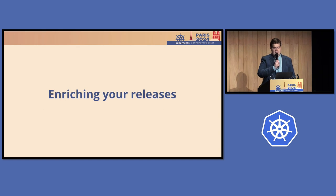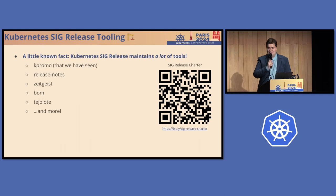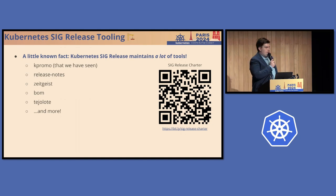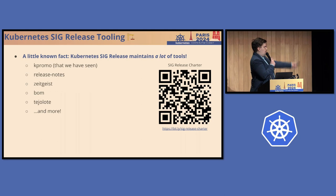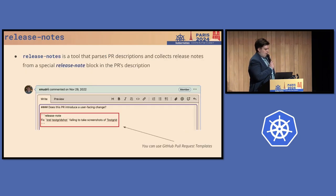Now we're at the part about enriching your releases. Maybe a little-known fact — or maybe very well-known — Kubernetes SIG Release maintains a lot of tools. I'd like to highlight some of them: K-Promo, which we've already seen; the release notes tool; Zeitgeist; BOM; Telehote; and more. I'm pointing to the SIG Release charter because it lists all the subprojects and tools we maintain. The first tool I'd like to start with is release notes, because it's one of my favorites.